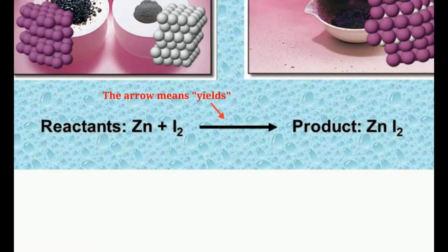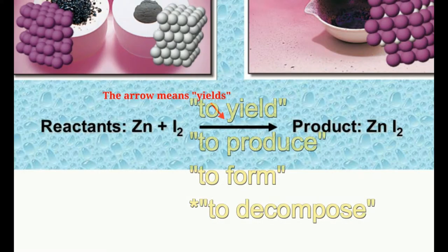If you're getting a product, you could say it has been produced — 'to produce.' The arrow can also mean 'to yield,' 'to produce,' or 'to form.' I'm going to give you a sentence, and you're going to need to know when you see 'to yield,' 'to form,' or 'to produce,' that really just means the arrow.